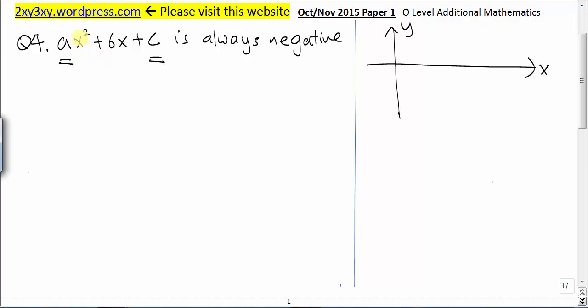Now this is a quadratic graph and because the coefficient a is always negative, we can expect the graph to be a sad face. This is the graph of y equal to ax² plus 6x plus c.